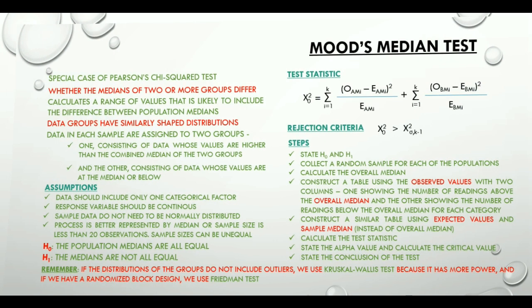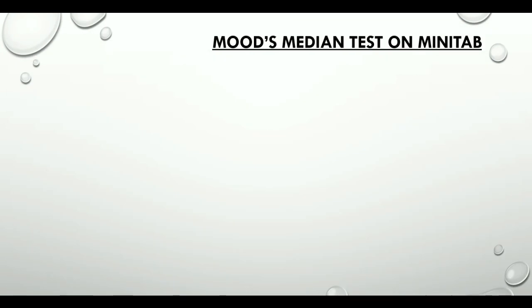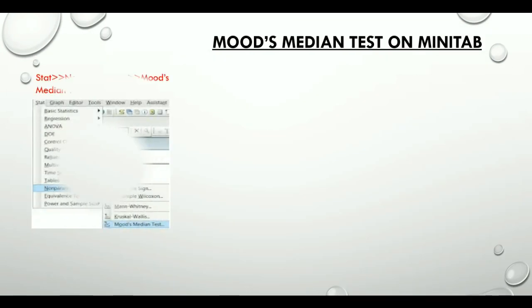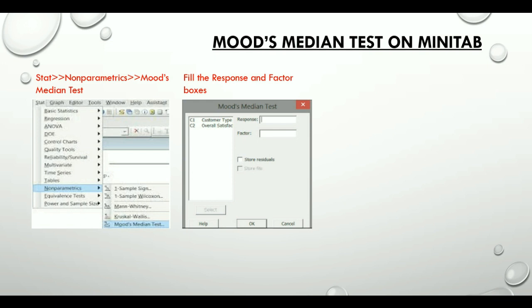Now let's quickly look at a sample Minitab output for this test. We would click on Stat, Non-Parametrics, Mood's median test. Then we will fill the response and factor boxes. And finally here is a Minitab summary output.